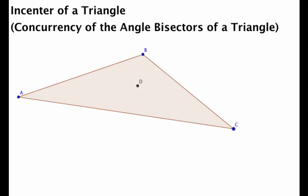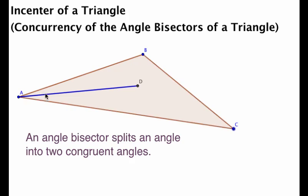In other words, if we were to construct the lines that bisect each one of the angles of the triangle, so in other words this line here is cutting this angle perfectly in half, and we'll prove that in a second.